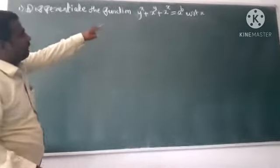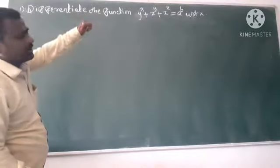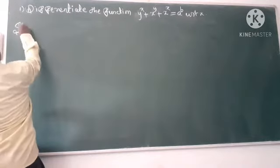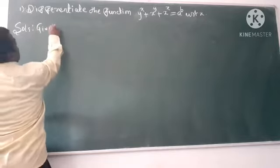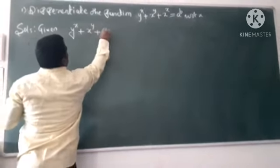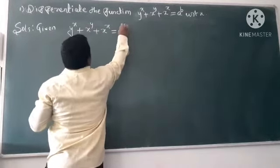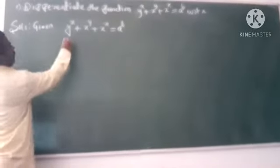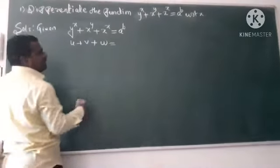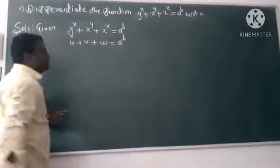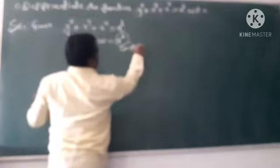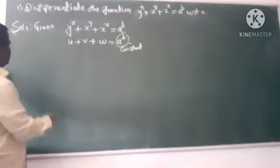We need to differentiate where y^x + x^y + x^x is equal to a^b. For the solution, let u + v + w equal the full expression. Since a^b is a constant, the right-hand side is constant, so the derivative should be 0.